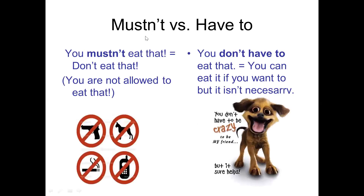For negative obligation: 'mustn't' expresses necessity — 'You mustn't eat that' means 'don't eat that, it is forbidden.' However, 'don't have to' or 'doesn't have to' means it is not necessary but you can if you want. For example: 'You don't have to eat that' means you can eat it but it isn't necessary. There is an important difference between 'mustn't' and 'don't have to.'